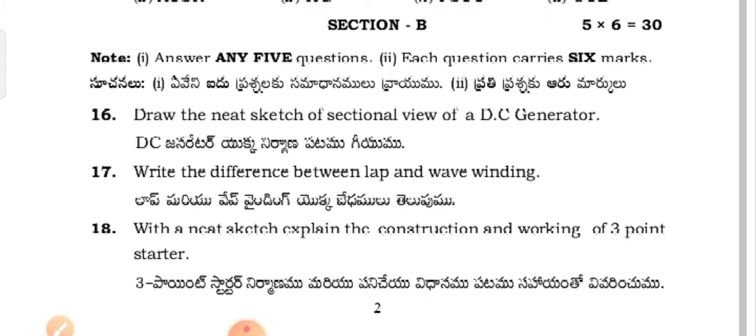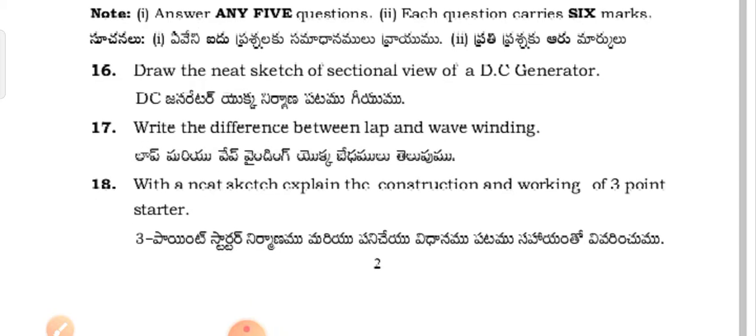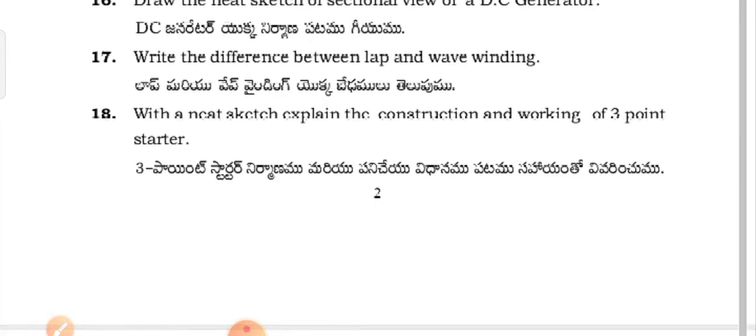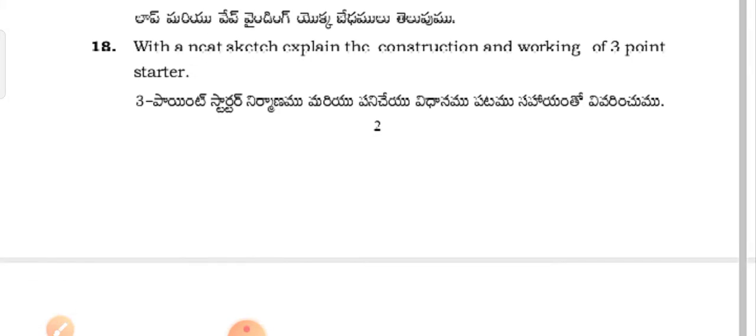Section B questions: Draw the neat sketch of a skeletal view of a DC generator. Write the difference between lap winding and wave winding. With a neat sketch, explain the construction and working of a three-point starter.